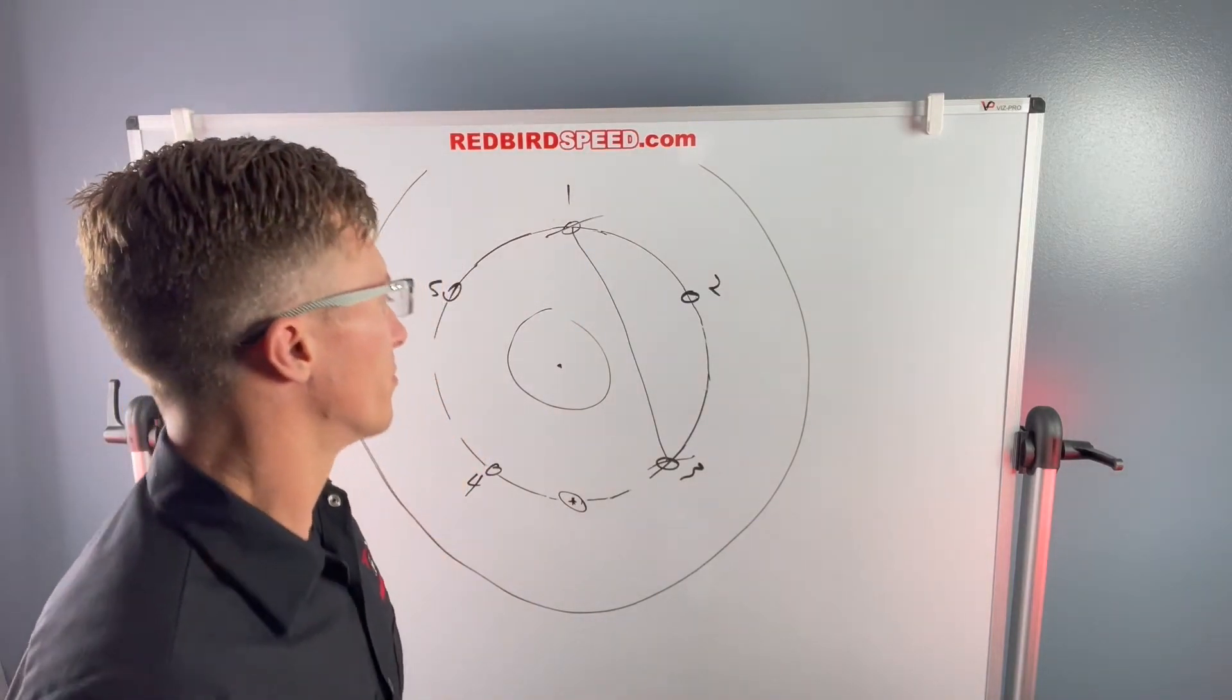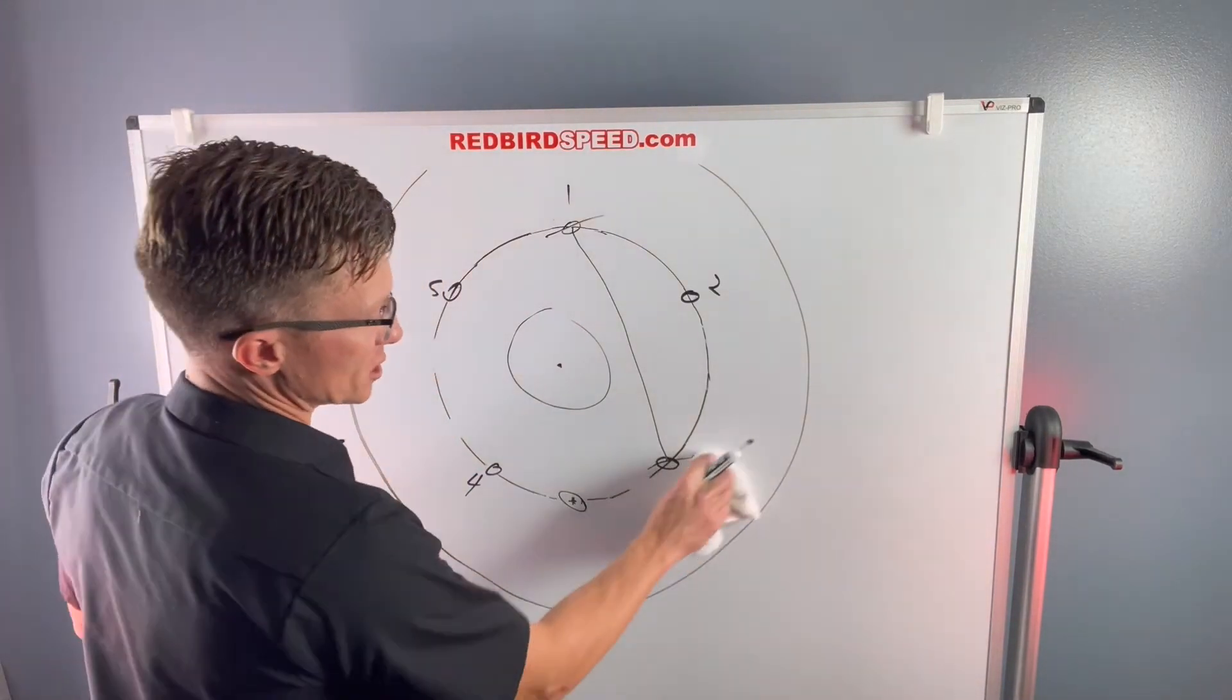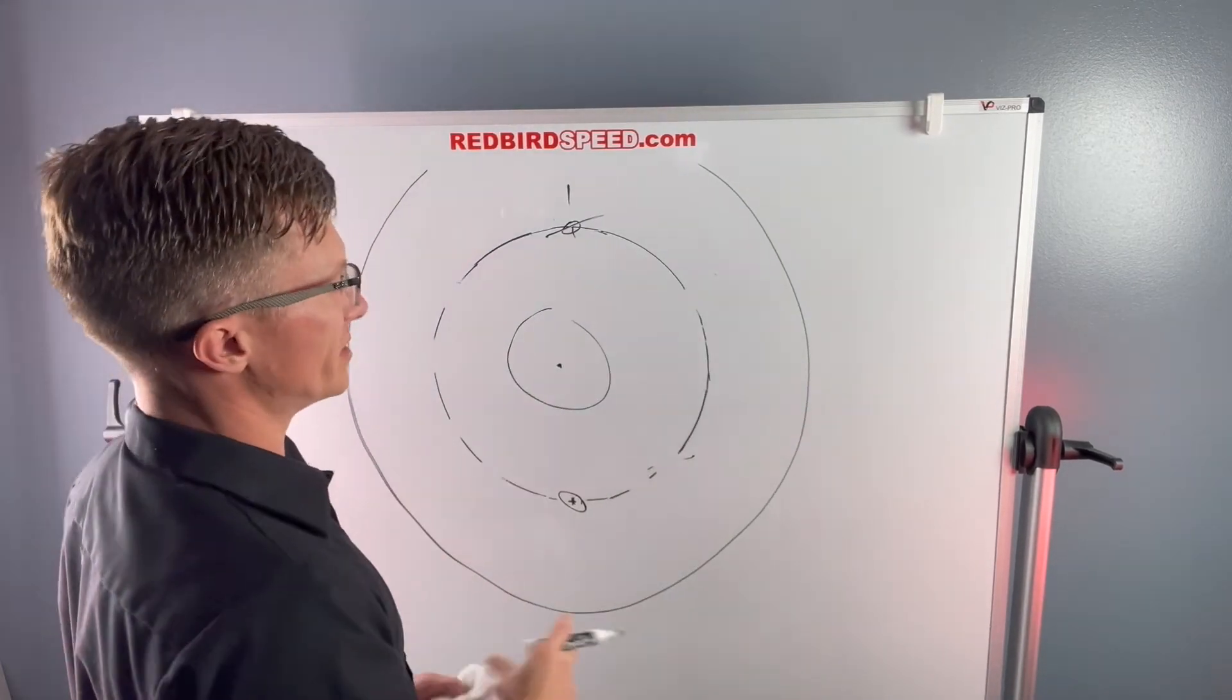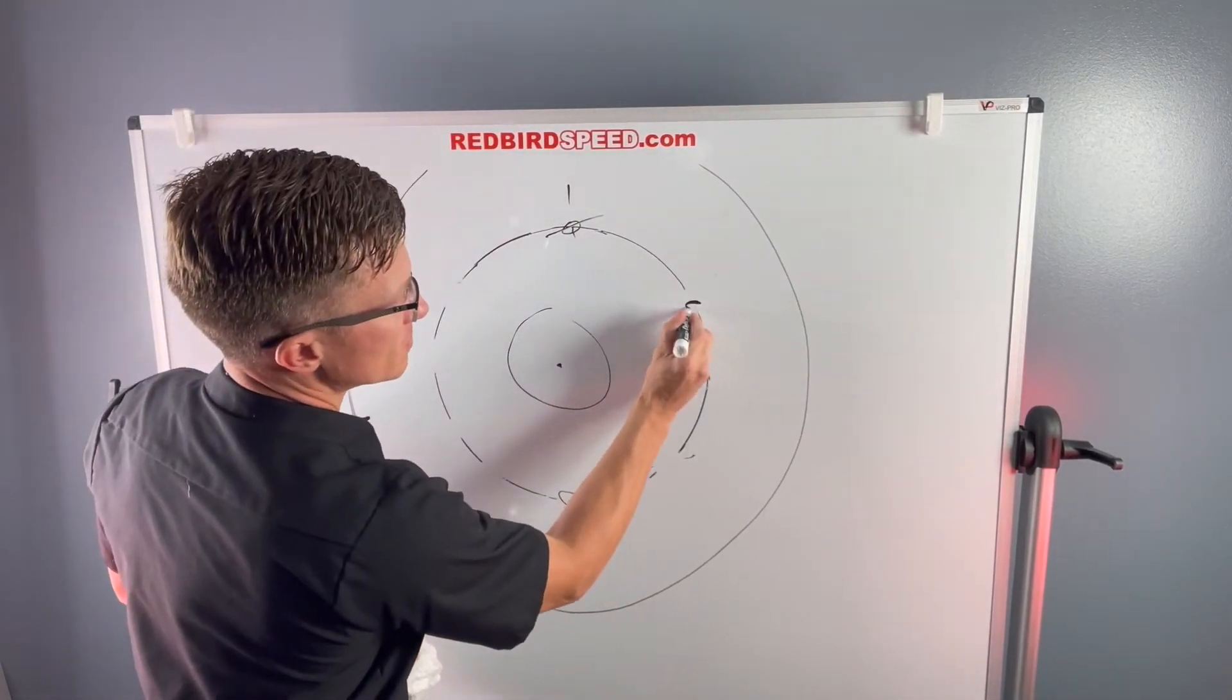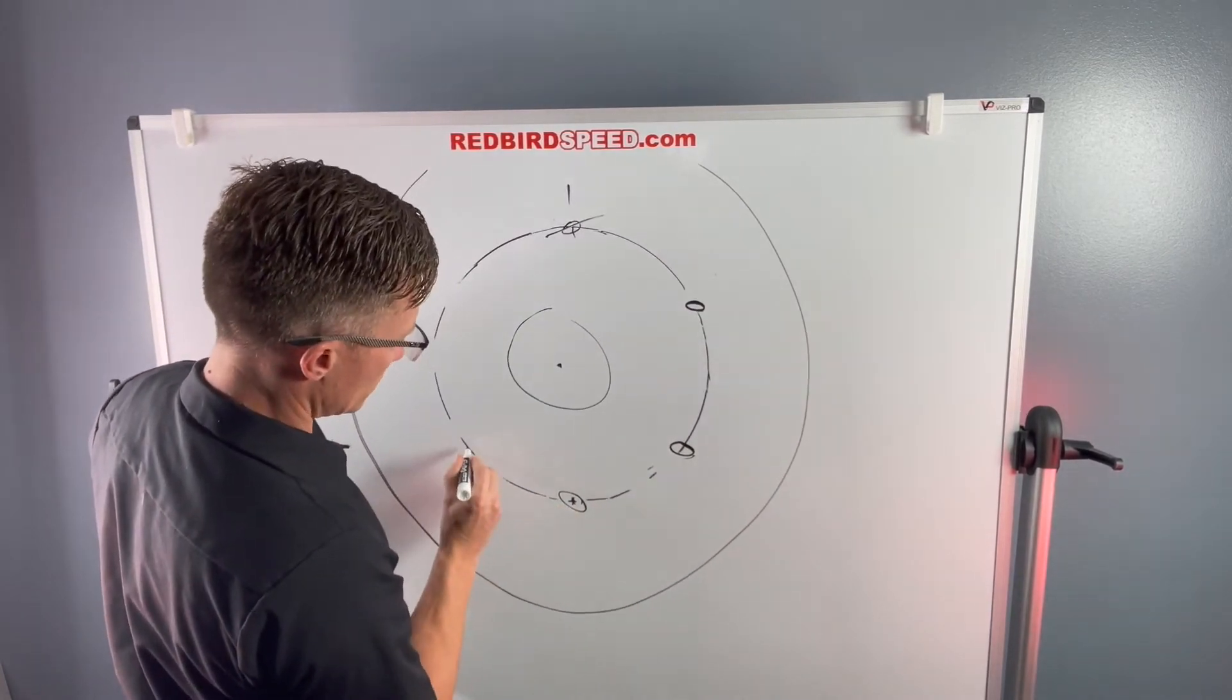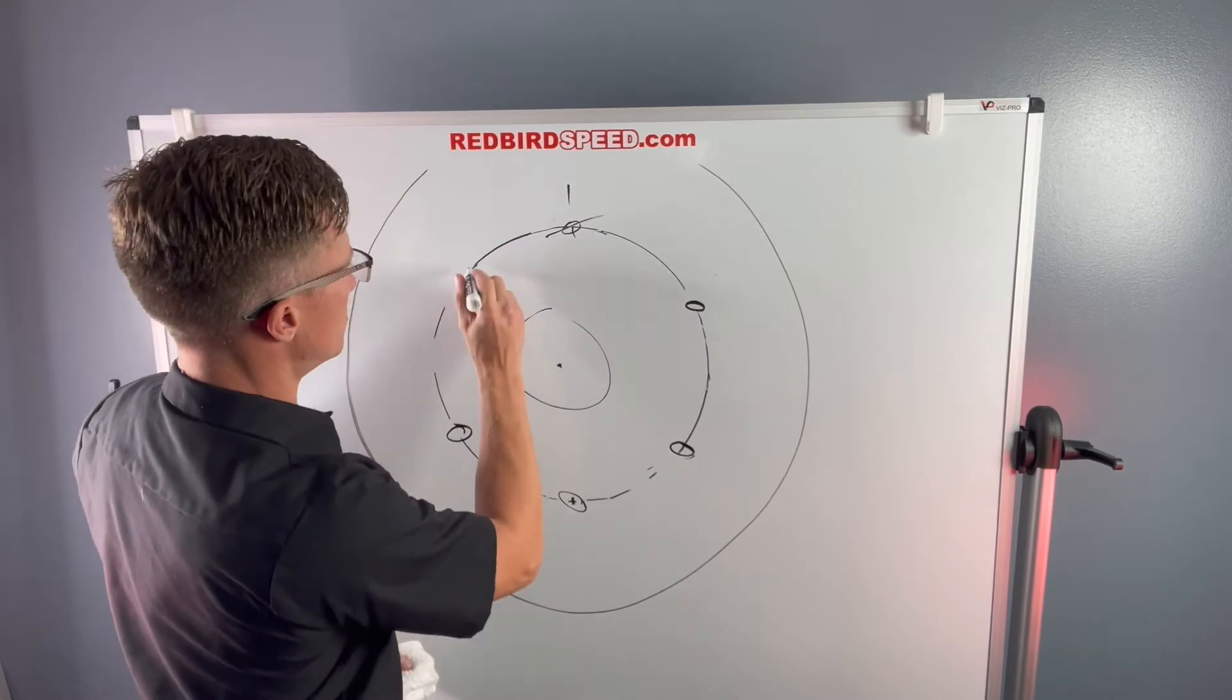So let's talk about something like a six lug axle in a Chevy truck. So a six lug axle, you get your stud one, stud two, stud three, stud four, stud five, stud six.